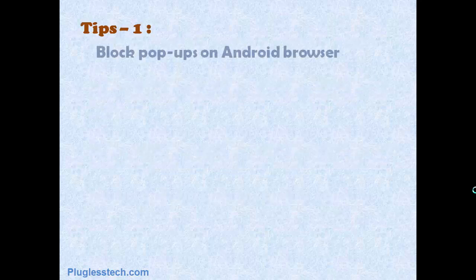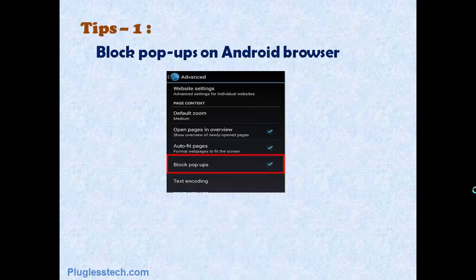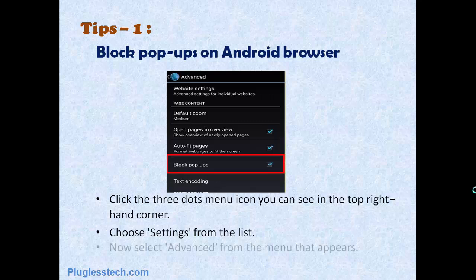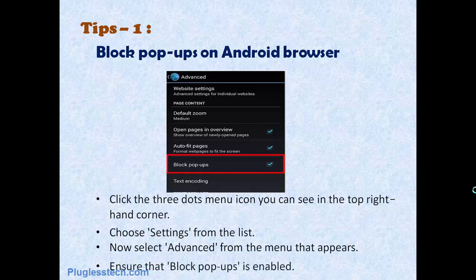Tip 1: Block pop-ups on Android browser. Click the three dots menu icon you can see in the top right-hand corner. Choose Settings from the list, then select Advanced from the menu that appears. Choose to ensure that Block pop-ups is enabled.